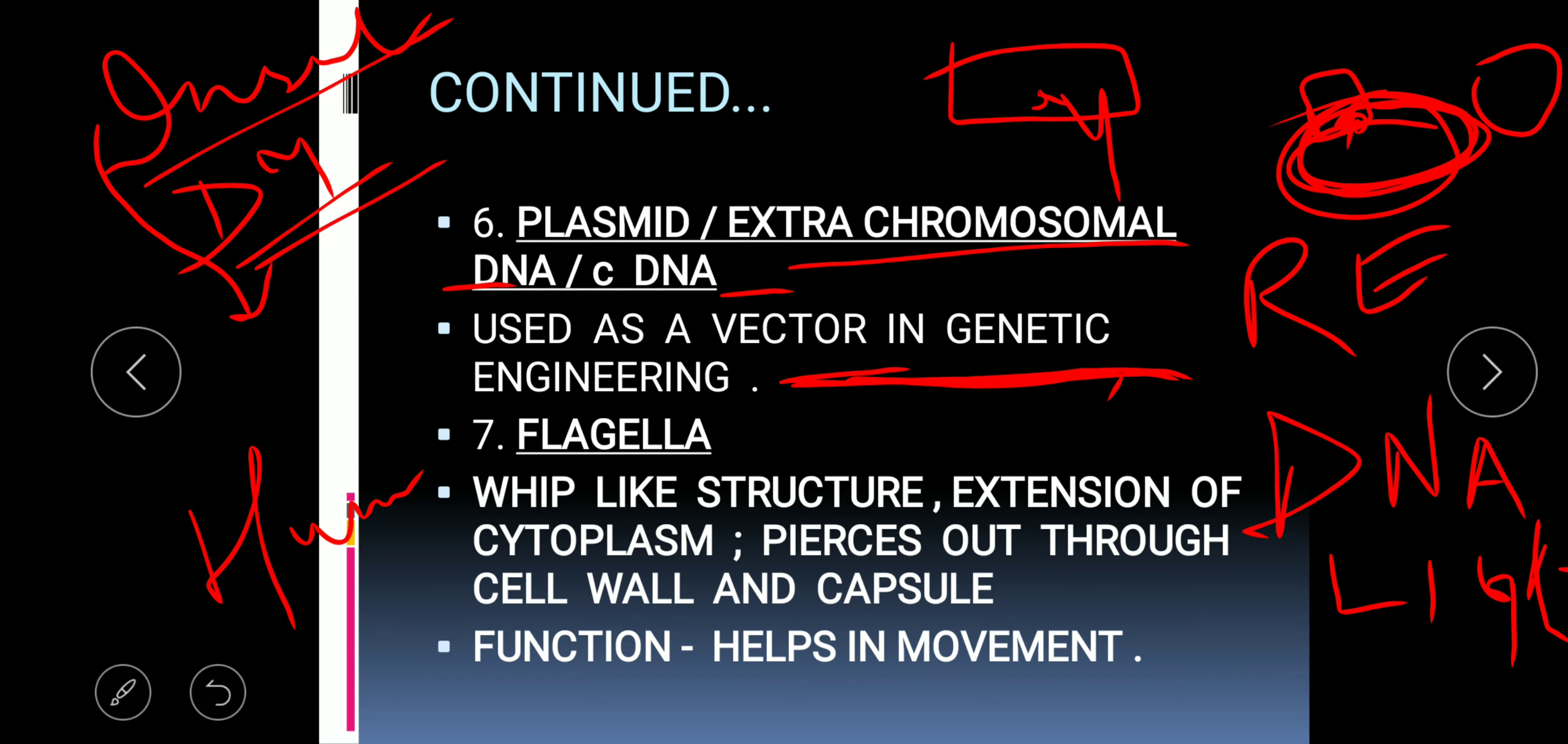Flagella is a whip-like structure, an extension of cytoplasm which pierces through the cell wall and capsule. By whipping and lashing movement, flagella helps bacteria move from one place to another.